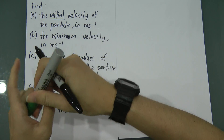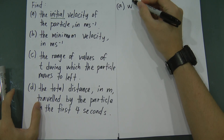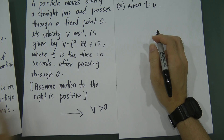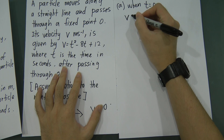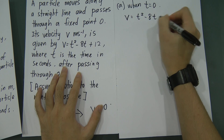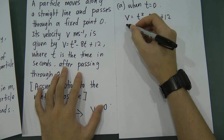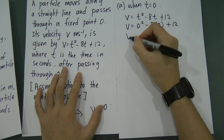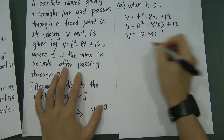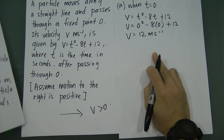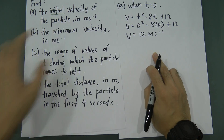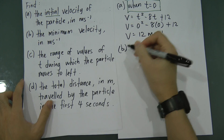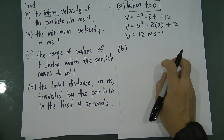Whenever you see the word 'initial', the first thing that comes to mind is t equals zero. So substituting into v equals t squared minus 8t plus 12, when t equals zero, v equals zero squared minus 8 times zero plus 12, giving v equals 12 ms⁻¹. That gets you one mark. Always understand what 'initial velocity' means — it means t equals zero.